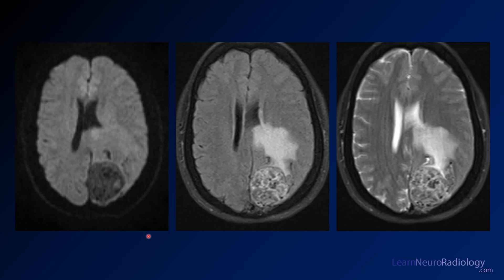Here we have some images from an MRI through the corona radiata and the lateral ventricles. On the left you have diffusion, the middle one is FLAIR, and the right is T2.